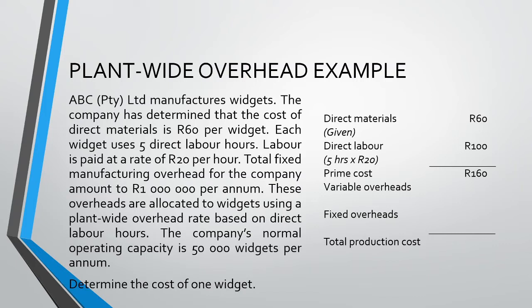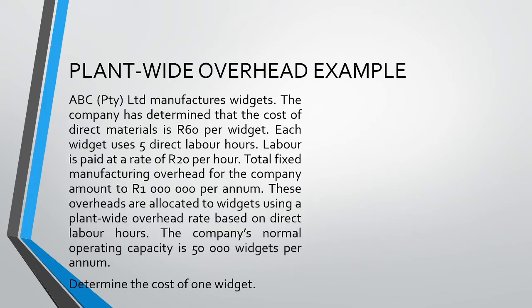We can add our direct costs together to get our prime cost of 160 Rand. The scenario tells us nothing about variable overheads, so we can exclude it and leave it as zero. Now we come to the part we are really interested in — the fixed overheads. These need to be allocated to the products using a plant-wide basis. Remember to calculate our fixed overhead rate, we need to divide our total fixed manufacturing overhead by the cost driver.